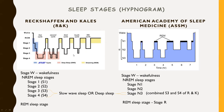In the RK criteria, we used to refer to REM sleep stage; now we label it as Stage R. So in all deliberations going forward, we will use the AASM terminology: Stage W for wake, and NREM sleep stages N1, N2, and N3 — where N3 is the combination of both S3 and S4 in RK classification, also called deep sleep state — and R for the REM sleep state.